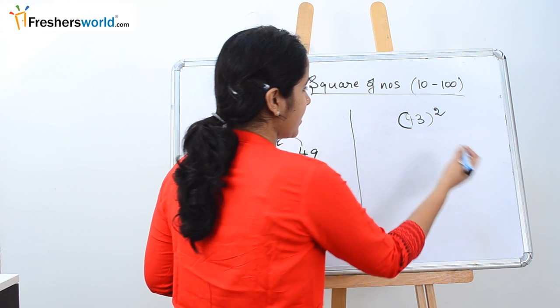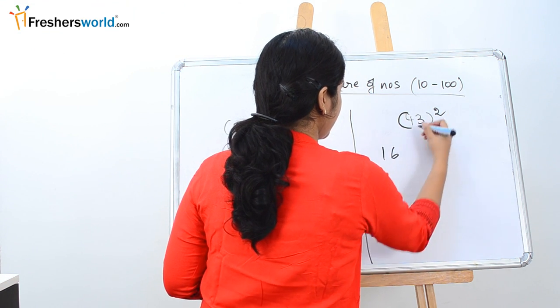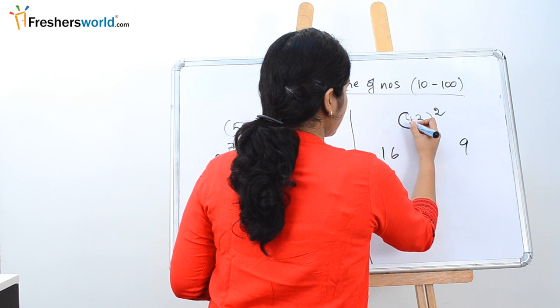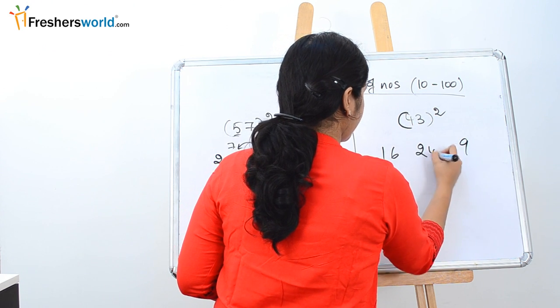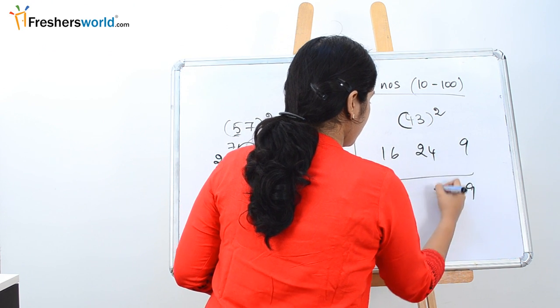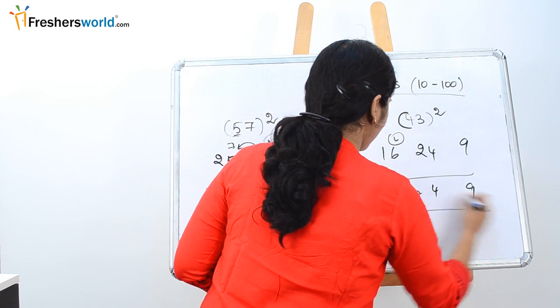So let's solve another sum. So 43 square they are asking. So 4 square is nothing but 16. 3 square is 9. 4, 3 is 12. 12 into 2 is 24. So we do last digit 4. So 4, 2 is carried over here. So 1, 8, 4, 9.